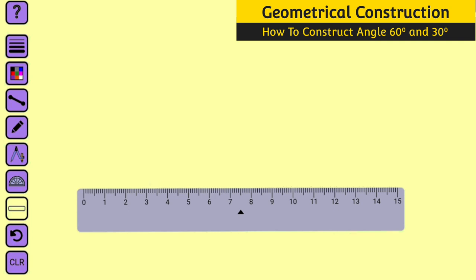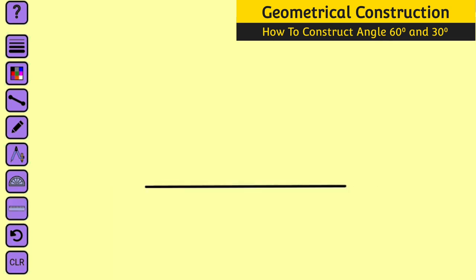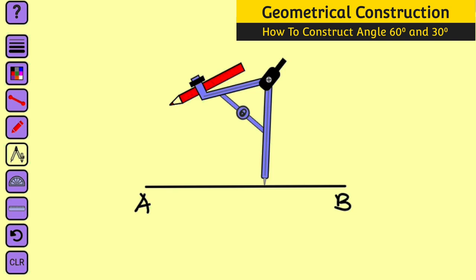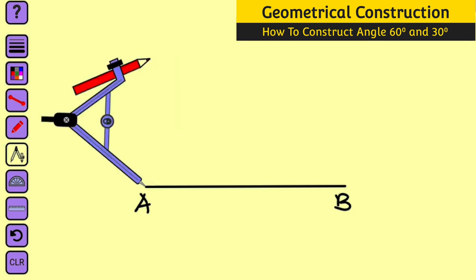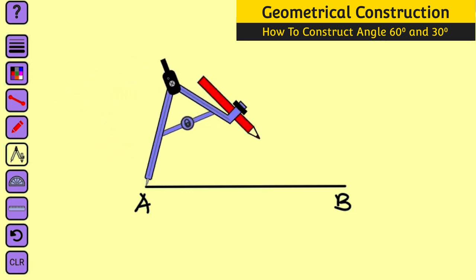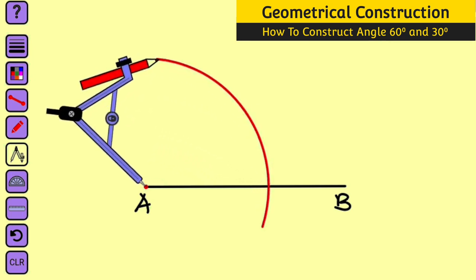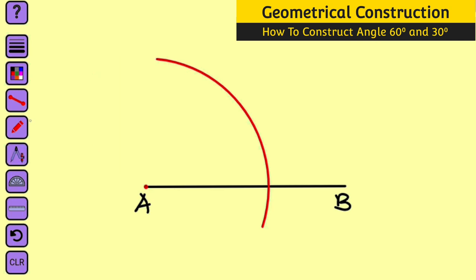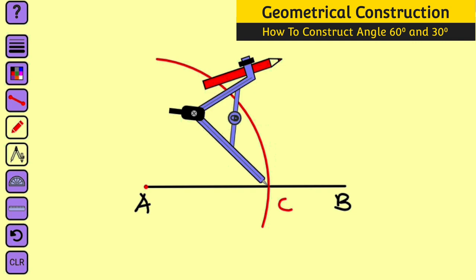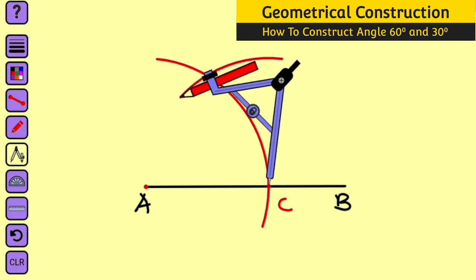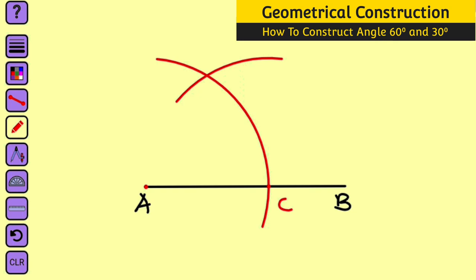Bring your ruler and draw a straight line. Label the points as A and B. Bring the compass and take it to point A. Draw an arc to cut the line and extend it to the top. Remove the compass and label the point of intersection as C. Bring back the compass, place it at point C, and draw an arc to cut the initial arc — same radius, do not change it. Remove the compass and label the point of intersection as D.